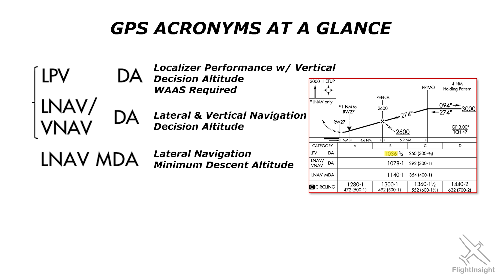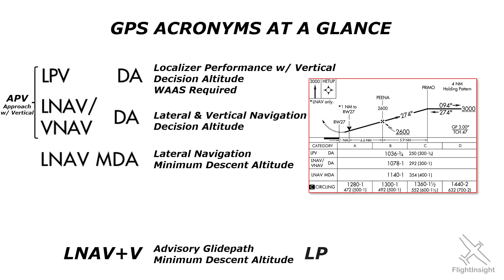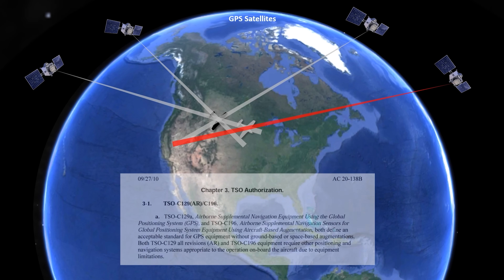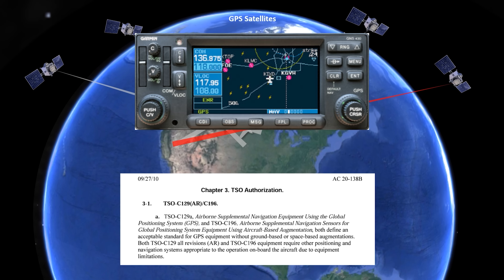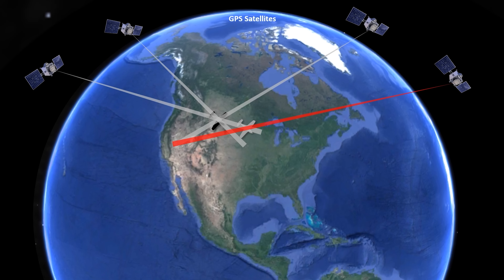One of the toughest things about learning GPS is keeping all the different acronyms straight in your head. We know the GPS system can be augmented in various ways to make it more precise for IFR flying, and we may be familiar with terms like RAIM and WAAS. But what are they? What's the difference? And can we have one without the other?